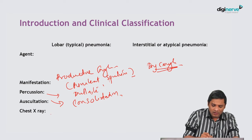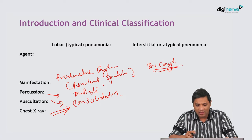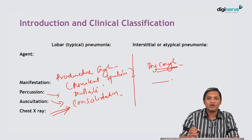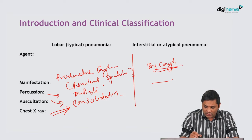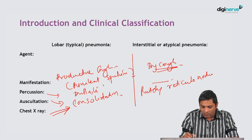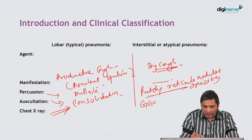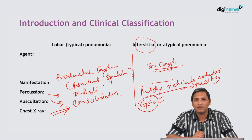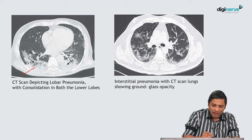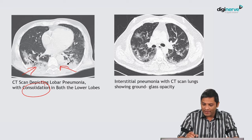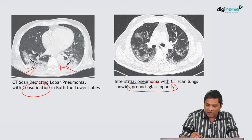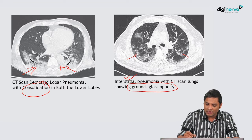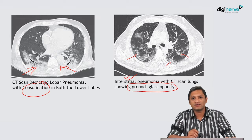Consolidation is also seen when you do a chest X-ray. In contrast, in interstitial pneumonia you will have patchy reticulonodular opacities. Ground glass opacity, or GGO, is common in interstitial or atypical pneumonia. Looking at a CT scan image, lobar pneumonia typically shows consolidation, whereas ground glass opacity is typical of interstitial pneumonia.